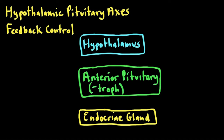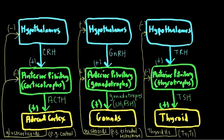Here's what the schematic looks like. We have our hypothalamus at the top, with releasing hormones CRH, GnRH, and TRH coming out. These are marked with a plus because when these hormones go up, the output of the gonadotrophs, corticotrophs, and thyrotrophs goes up. Conversely, if the levels of these hormones go down, the output goes down — so it's a positive relationship.